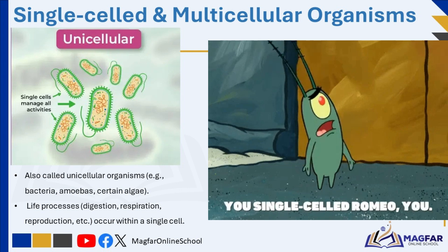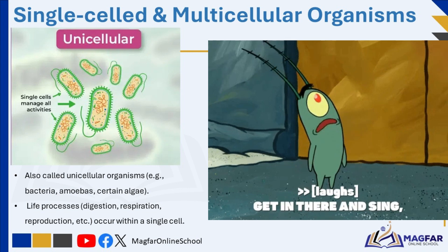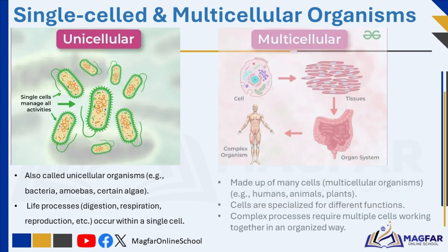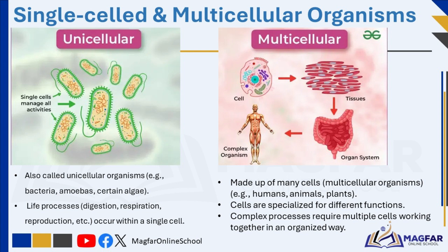In these organisms, all life processes — including digestion, secretion, respiration, reproduction, and breathing — occur within a single cell. In contrast, multicellular organisms are made up of many cells and include macroscopic organisms such as humans, animals, and plants. These organisms are visible to the naked eye and have cells that differ in shape and function, making them specialized for specific tasks. The complex processes required for survival cannot take place in a single cell, so the cells must work together in an organized manner to ensure the proper functioning of the body.